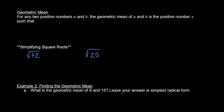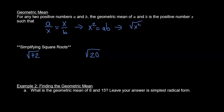This brings us to the geometric mean. The geometric mean says that for any two positive numbers A and B, the geometric mean is the positive number X such that A over X equals X over B. Cross-multiplying, X squared equals AB, and taking the square root gives us X equals the square root of AB.